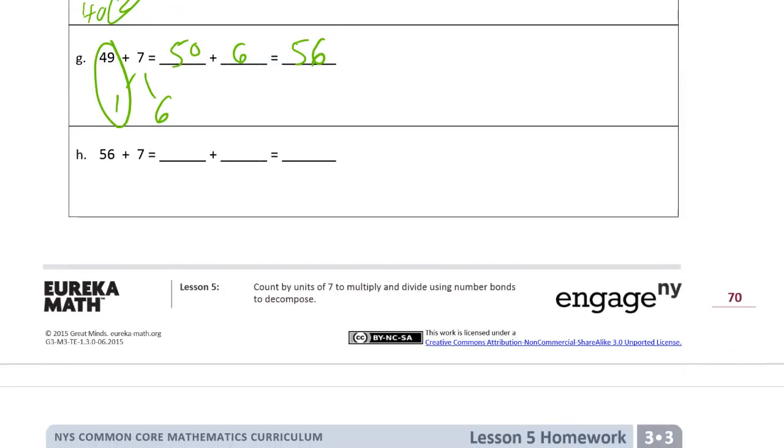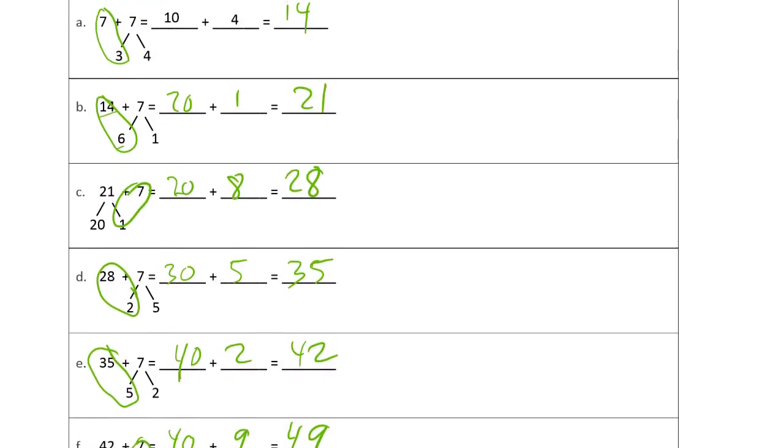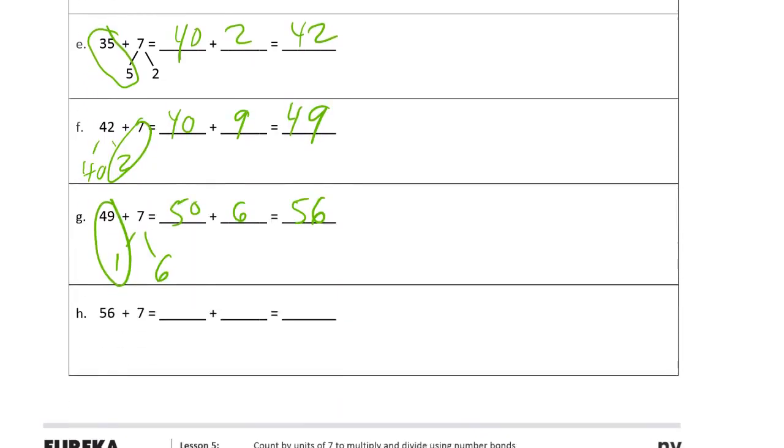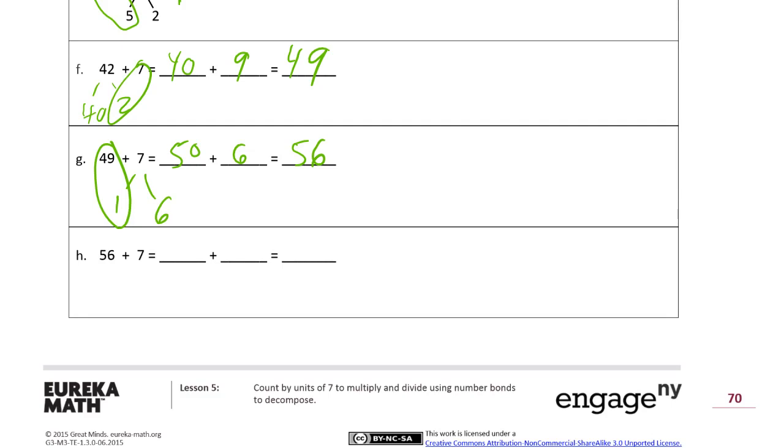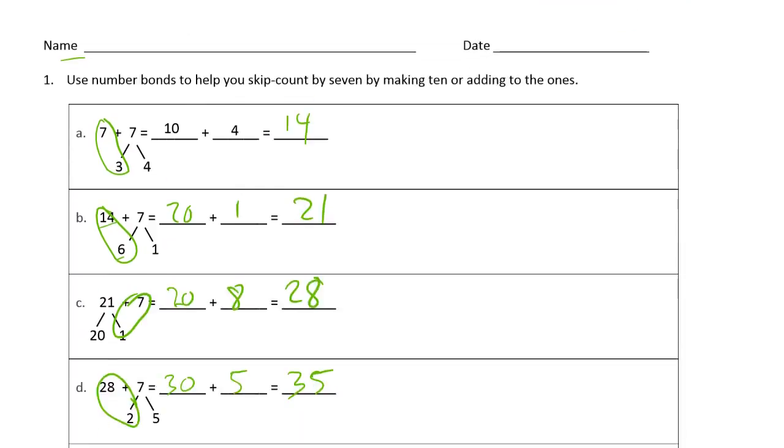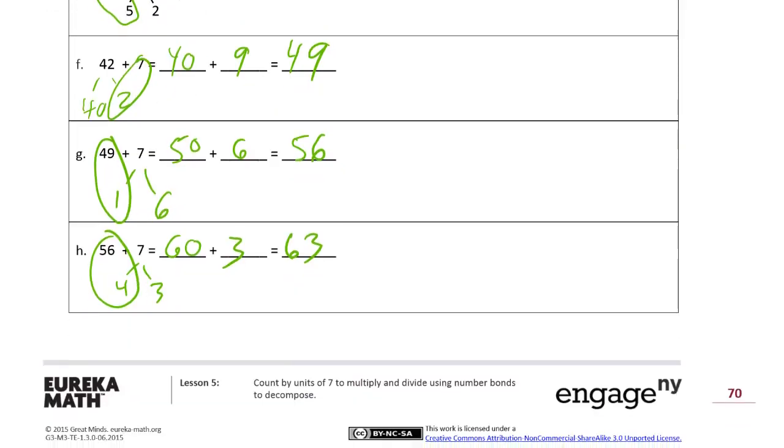And then 56 plus 7. We've been here before, the 6 plus 7, right? That was, well, we didn't have that one before. 6 needs a 4. 3's left. There's 60. 60 plus 3, 63. And we've just been counting by 7s, right? 7, 14, 21, 28, 35, 42, 49, 56, and 63.